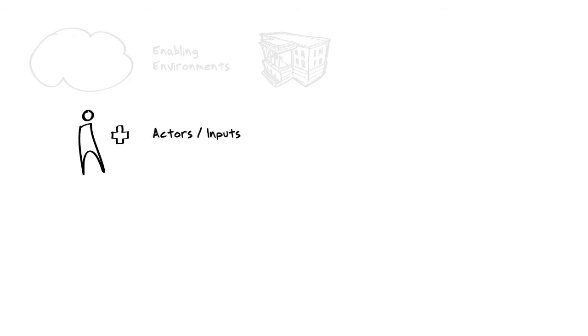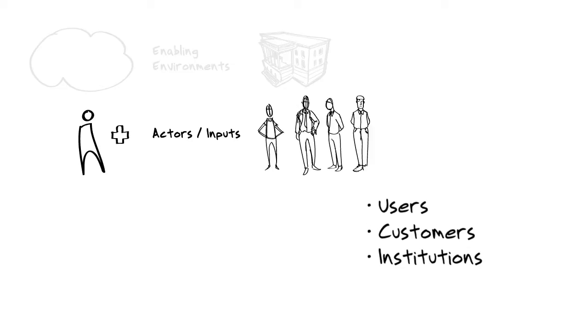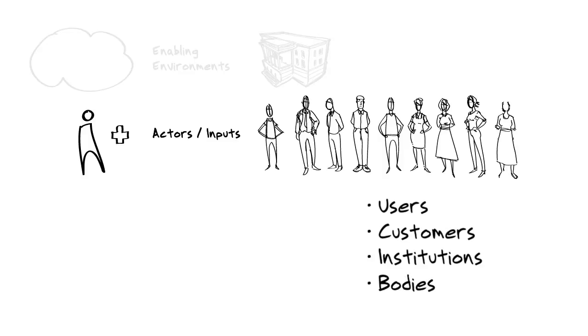Actors and inputs constitute a second dimension. For inputs, think about technologies. What are the technologies at play? Actors might include users who could be separate from customers, institutions such as your ministries of health, or bodies like a community health worker organization or a group of farmers organized in a farming cooperative.